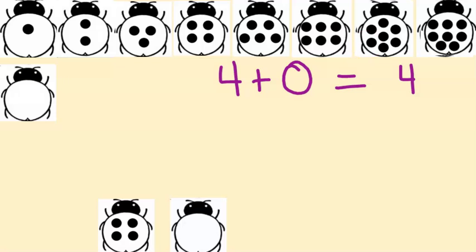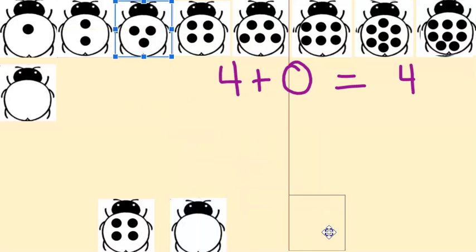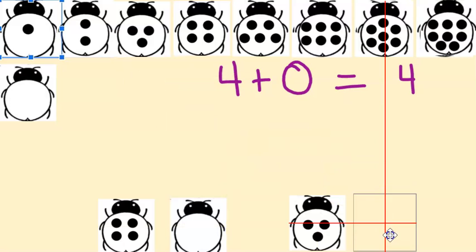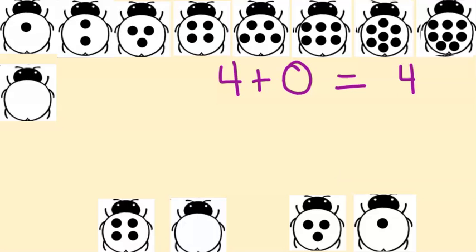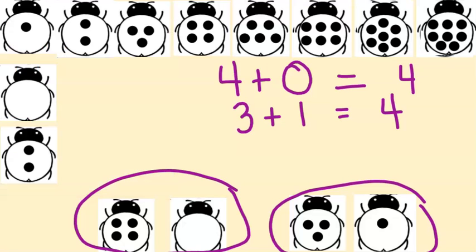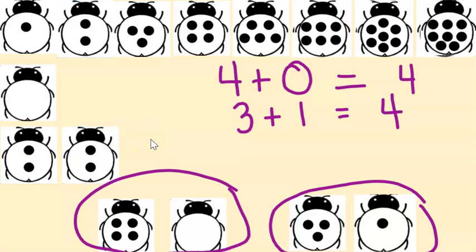Do you think we can find another one? Three — and what would I need to add to three to make four? That's right, one. So let's write that as an equation — this is pretty fun, isn't it? Three plus one equals four. Great job, so this makes four. Can we make another one? Let's see, I have two — what else can I add to two to make four? That's right, that's like a double, isn't it? So two plus two equals four.